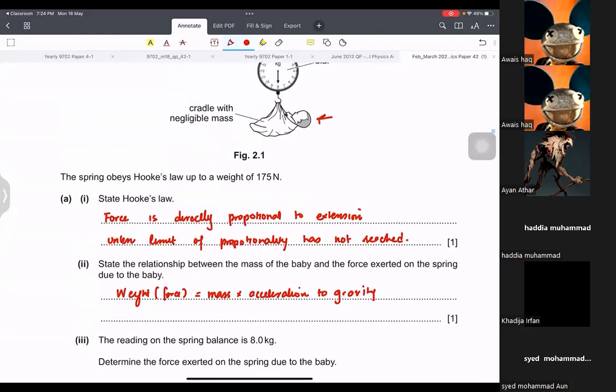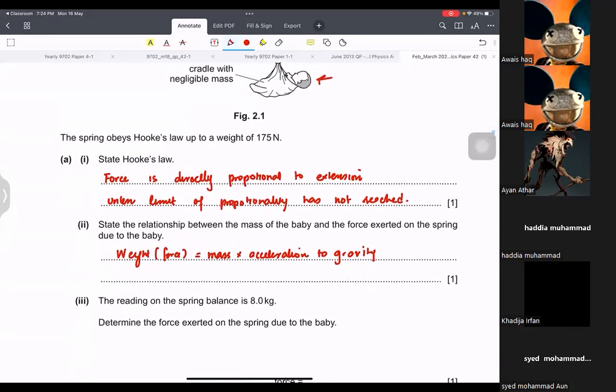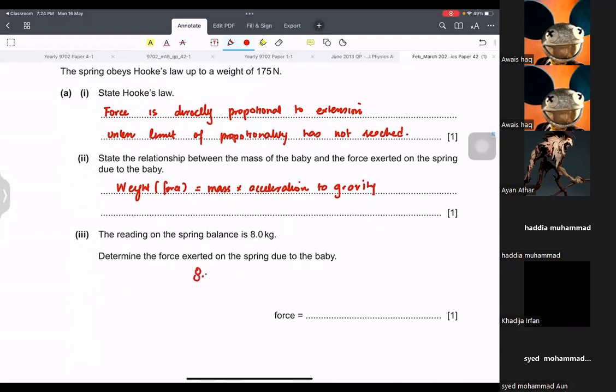Reading on the spring balance is 8. Determine the force. So it is going to be 8 times 10. So that's going to be 80 newtons. Because we used W equals to mg.